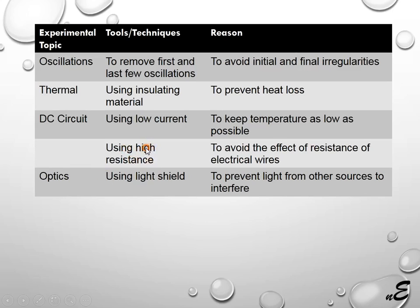Using high resistance: if we use high resistance, its value is much greater than the resistance of the conducting wires, which show 1 to 2 ohms. So if we take a resistance of 100 ohms, 1000 ohms, or kilo or mega ohms, the resistance of the conducting wires will be negligible. In optics-type experiments, we commonly use a light shield so that light cannot reach the target place from other sources. These are the common tools and techniques discussed.